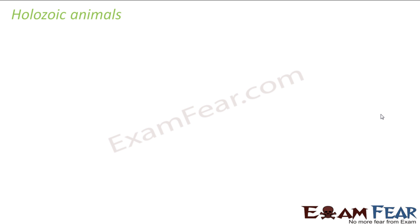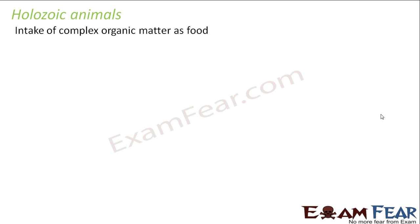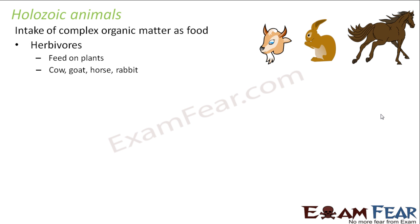Let us now talk about holozoic animals. In the holozoic group we have a variety of animals – not only human beings, but most of the animals we see around us. They involve intake of complex organic matter as food. Holozoic animals are further classified into three categories. The first is herbivores, derived from the word 'herb' meaning plants – so these are organisms which feed on plants. Examples: cow, goat, horse, rabbit.